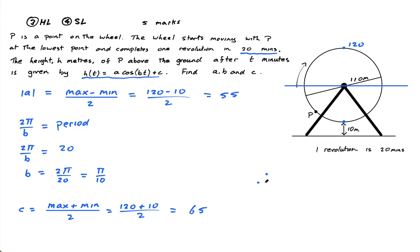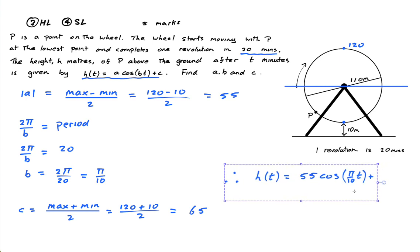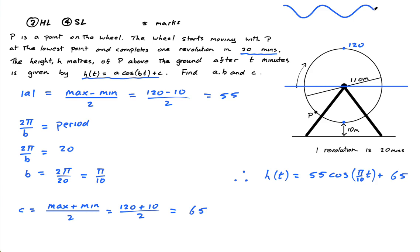Now, therefore, h(t) is equal to—let's just try 55 for a second. If I have 55 cos of π over 10 t plus 65. Okay, so if you remember, what does a cosine function look like, guys? Well, a cosine function starts at the top and goes down, and then up, and then down, and then up, and then down, etc.